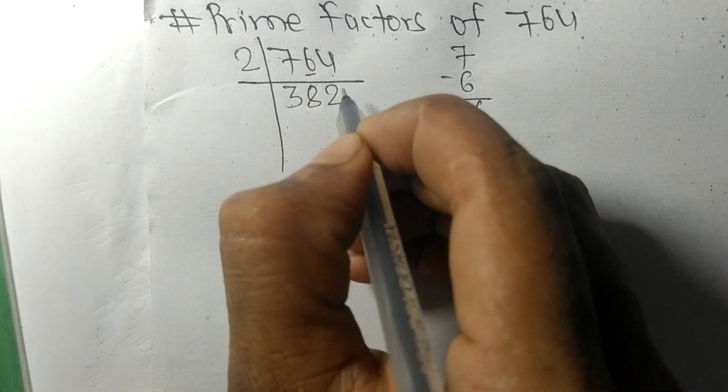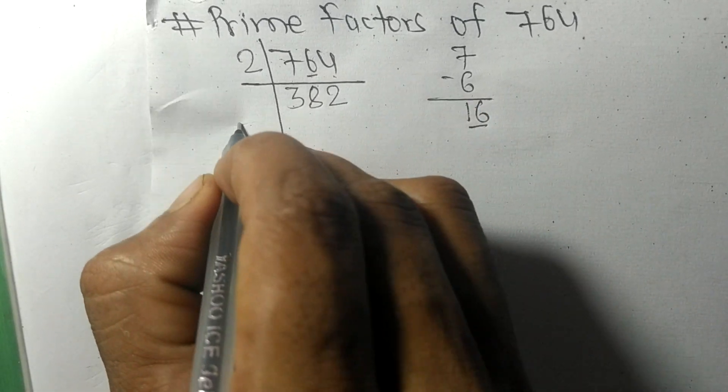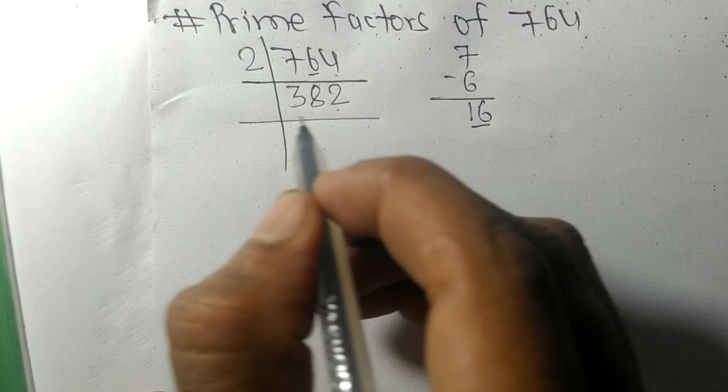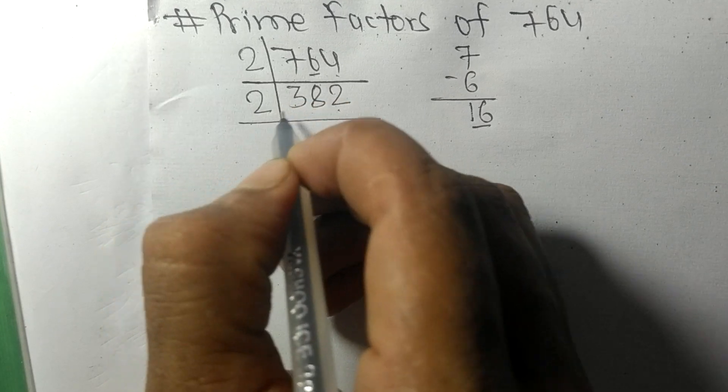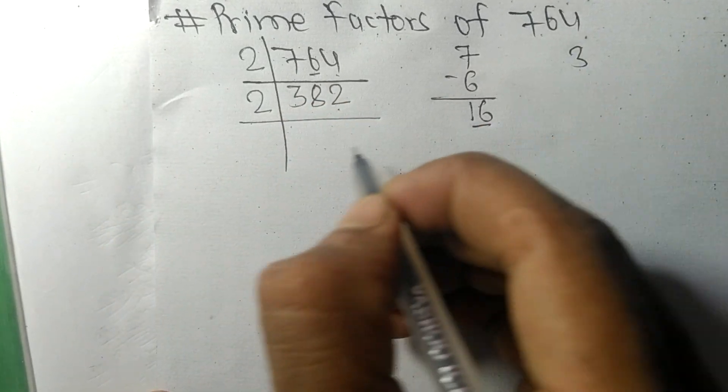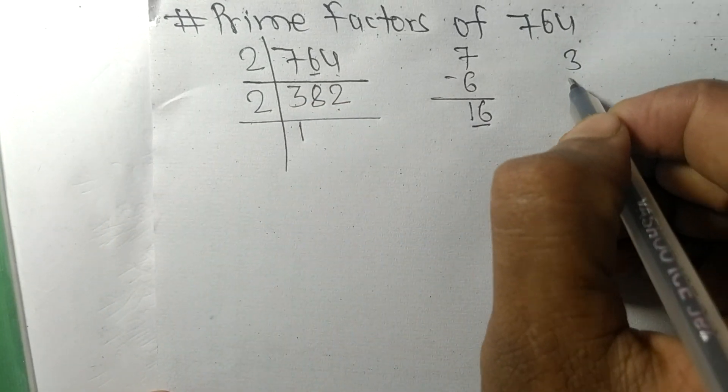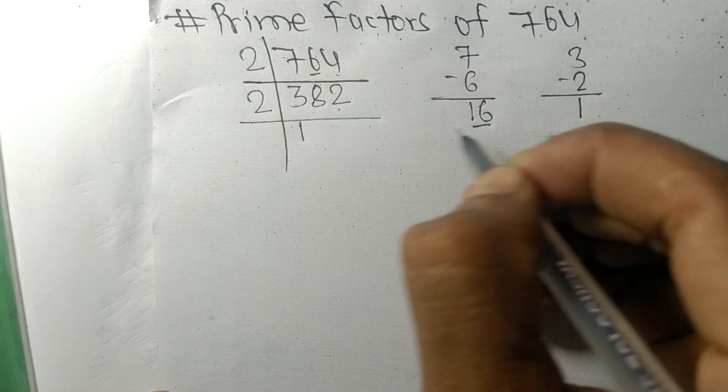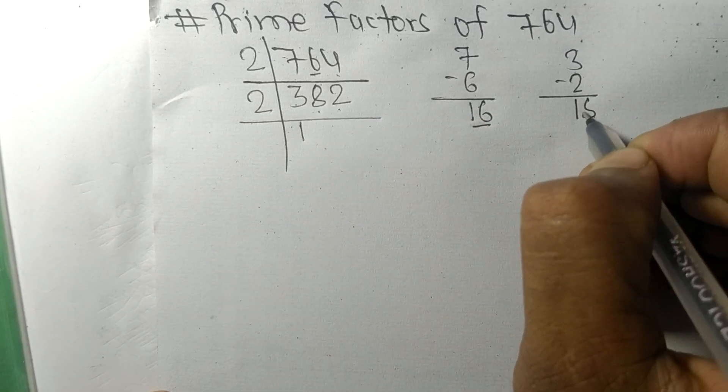First we have 3. 2 times 1 means 2. On subtracting we get 1, and this 8, 18. 2 times 9 means 18, and 2 times 1 means 2. So now we got 191, which is a prime number.